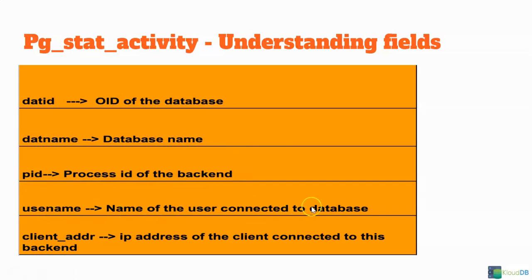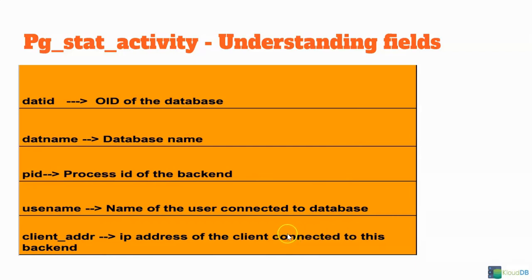Username is the username that is connected to the database. Let's say you have a different user for different applications — you can filter by the username. And then the client address is very important. This is the IP address of the client connected to the backend. Let's say there's a spike in load and you want to understand where the connections are coming from — you can filter by client address.